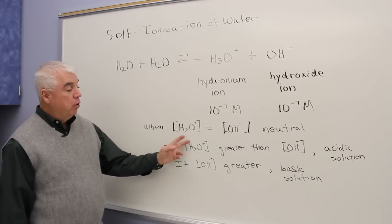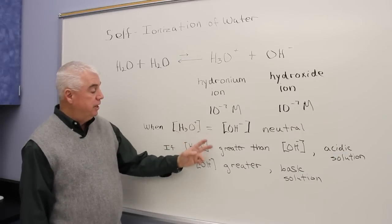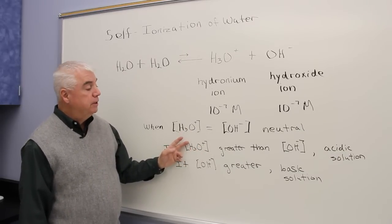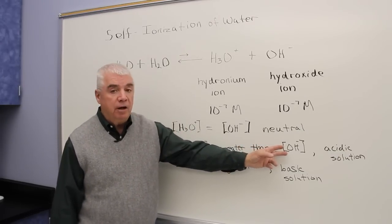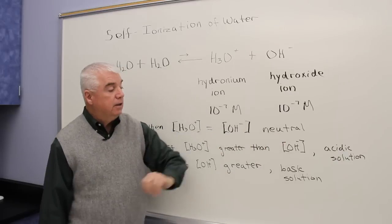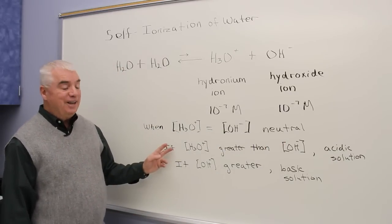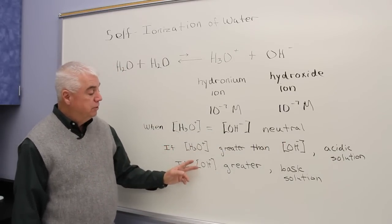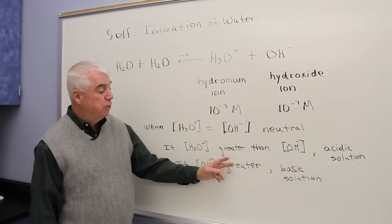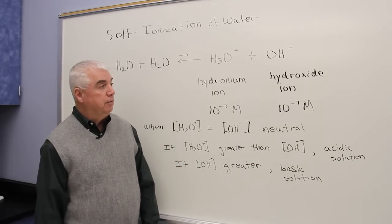If H3O+, you recognize this as the acidic or the acid component, is greater than a basic component, then the solution is said to be acidic. If the opposite case holds, if OH- concentration is greater, then we say it's a basic solution.